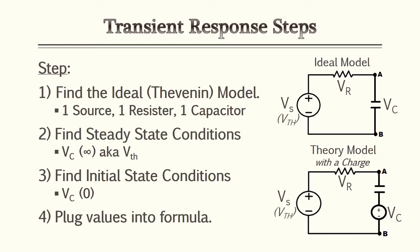To perform the transient analysis, we'll follow four transient response steps. First, find the ideal Thevenin model — one voltage source, one resistor, one capacitor. Second, find the steady state conditions, which is after five time constants. Third, find the initial conditions — what the capacitor voltage is at time zero. Fourth, plug and chug using the formulas from the previous slide.